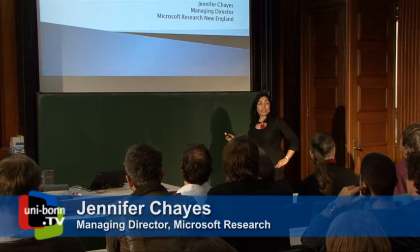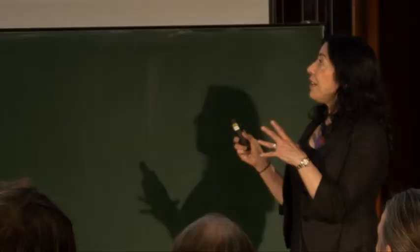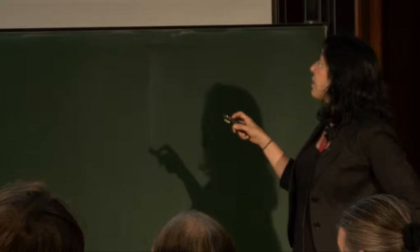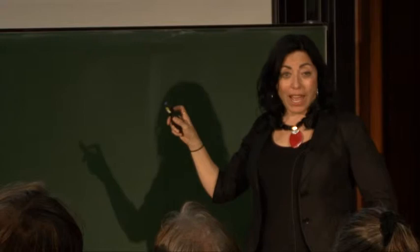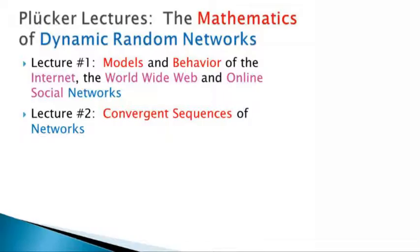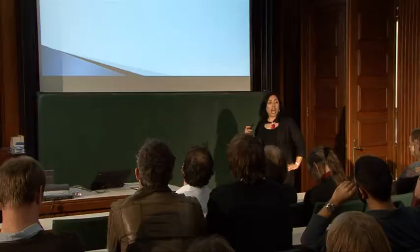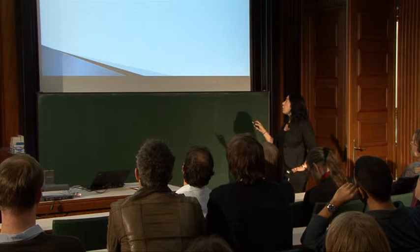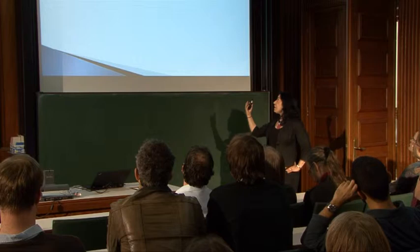This talk is more mathematical, less applications. I'm only going to talk about dense graphs — these are graphs where the number of edges is of order n squared. We learned last time that these kinds of networks are well modeled by graphs, and that a lot of relevant networks are well modeled by graphs.